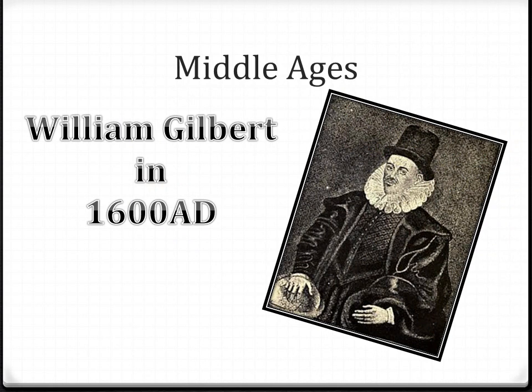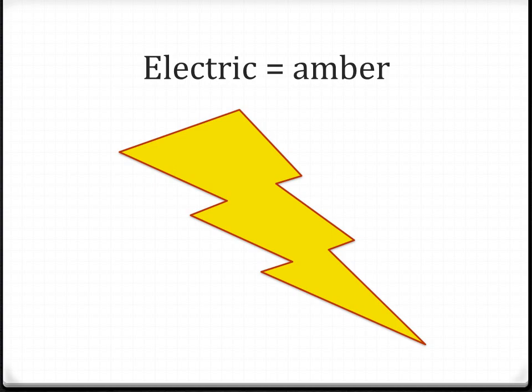In 1600 AD, an Englishman named William Gilbert started studying these phenomena. He wanted to come up with a good scientific explanation for these ancient discoveries. He was actually the first person to use the word electric, which is a variation of the Greek name for amber.